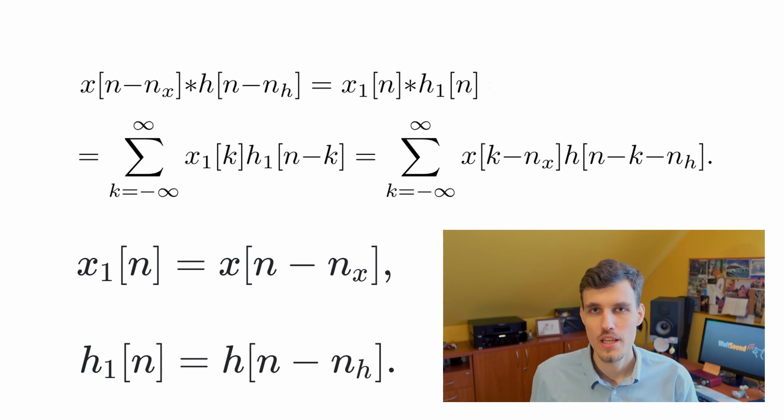Then use the convolutional sum directly and finally substitute back the original x and h functions. As you can see, in all this process we are quite certain that we're doing the right steps and there is no guessing inside.